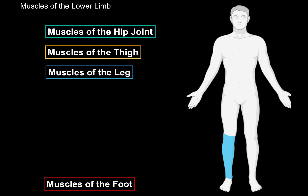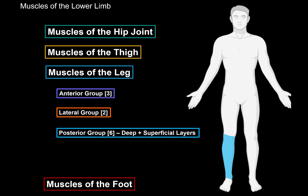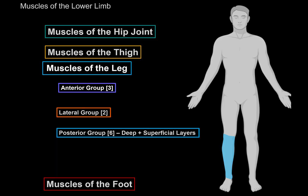The leg muscles are divided into 3 main groups based on their anatomical location: the anterior group, which consists of 3 muscles; the lateral group of 2 muscles; and a posterior group of 6 muscles layered as the deep and superficial. Let's work our way through all of these muscles starting with the anterior group.